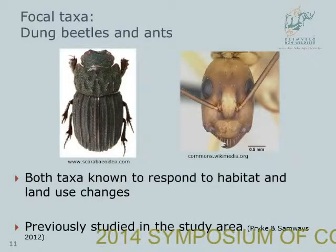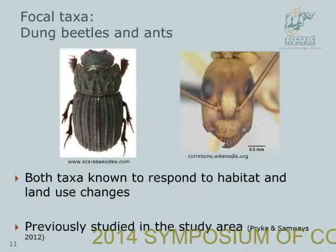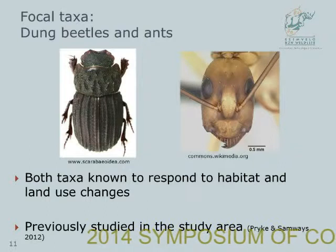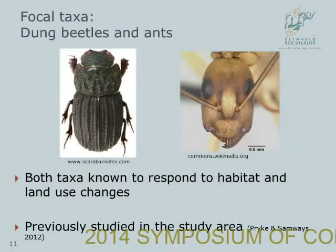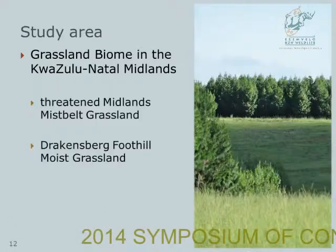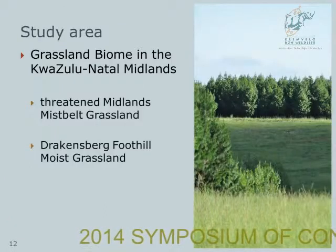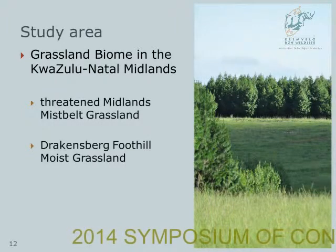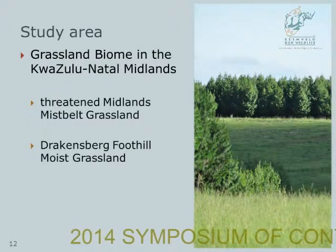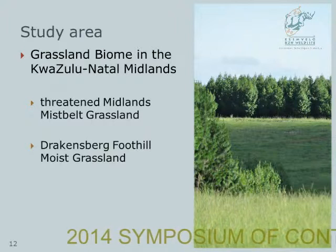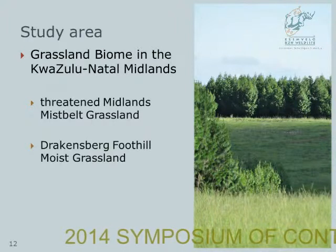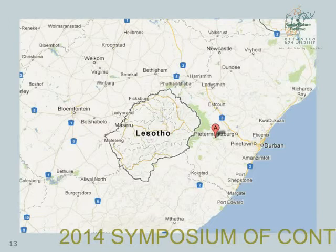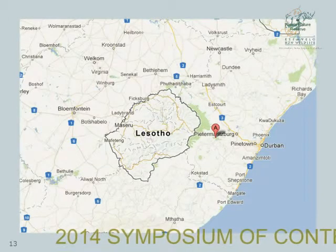I used ants and dung beetles as my focal taxa, as both are known to respond to habitat and land use changes and both have previously been studied in this area. My study area was in the grassland biome in the KwaZulu-Natal midlands, and the two main vegetation types in this area are the threatened Midlands Mistbelt Grassland and the Drakensberg Foothill Moist Grassland. My study area was quite close to where we are now.